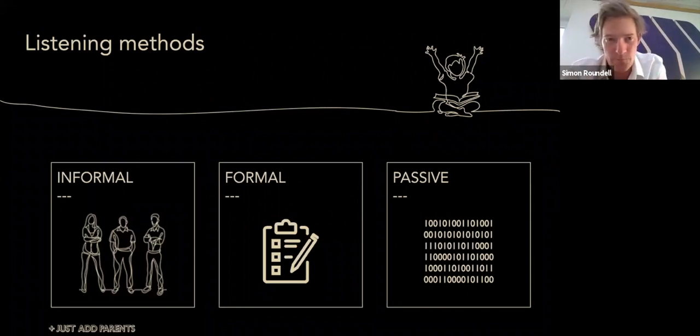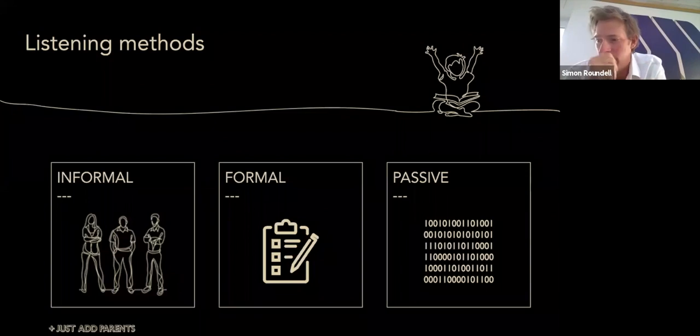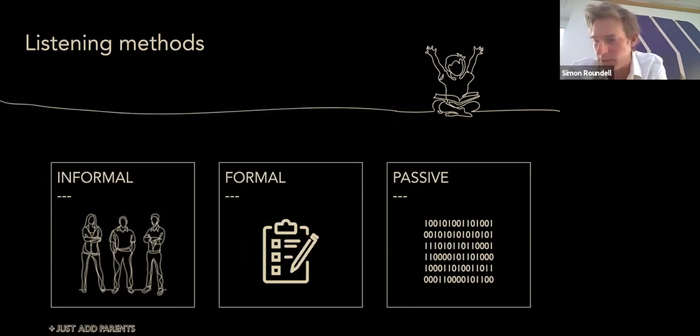The second one is formal listening methods. These are typical market research type things such as focus groups, surveys, parent meetings, conferences, etc., where you have agreed objectives and parameters and the information is purposefully codified.